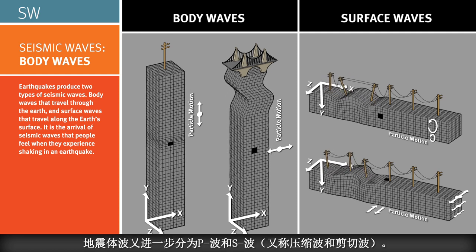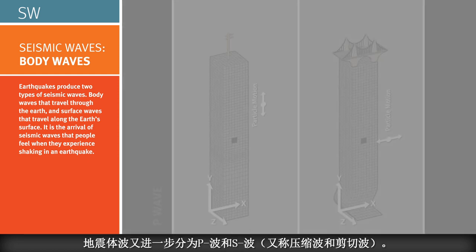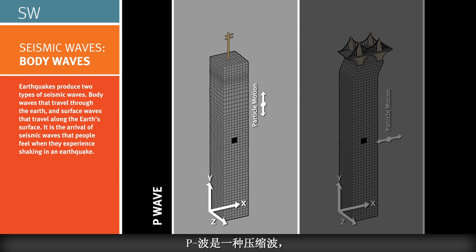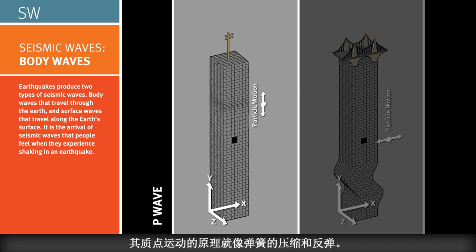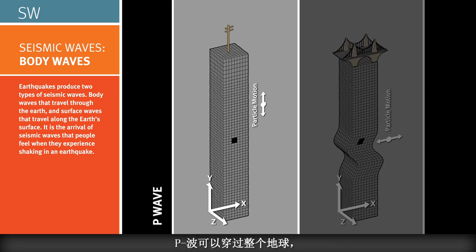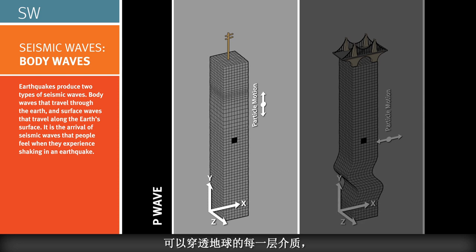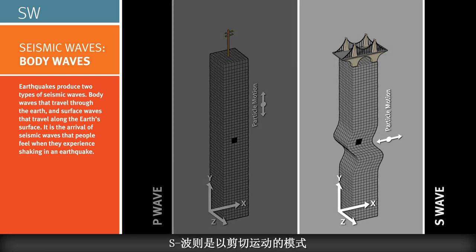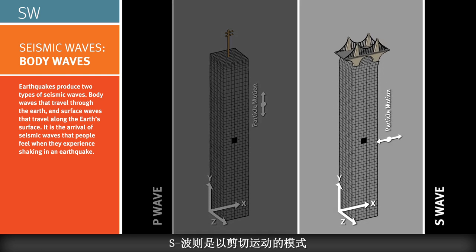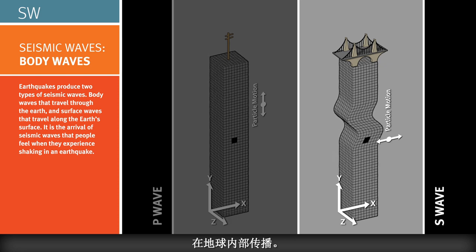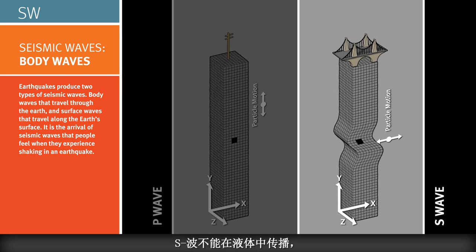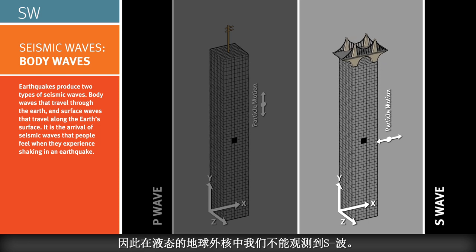Body waves can be broadly classified in two categories. The P wave, or primary wave, is a compressional body wave that alternately compresses and expands the particles that it moves through within the Earth. P waves can pass through any medium, and so travel through every layer of the Earth, and even the air, like sound waves. The S wave, or secondary wave, is a body wave that travels through the interior of the Earth with a shearing motion. S waves cannot travel through liquids, including the Earth's liquid outer core.